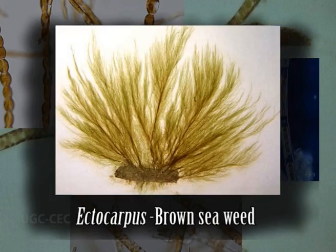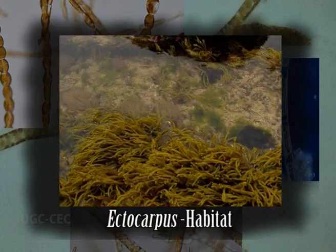Hello and welcome, dear students. Today's topic is Ectocarpus, a brown sea alga. The genus Ectocarpus shows many of the simplest features in the class Phaeophyceae and is one of the best known brown algae. It is often seen as hairy growths in pools, mostly attached to rocks and other algal species.